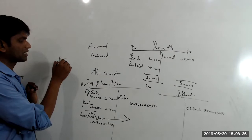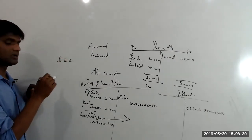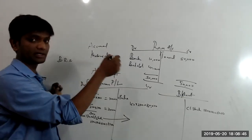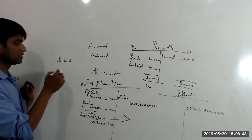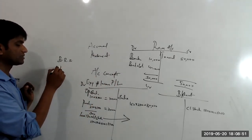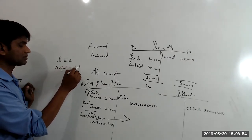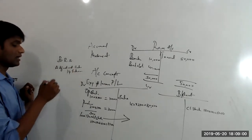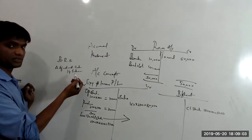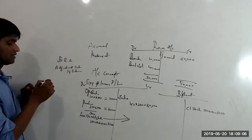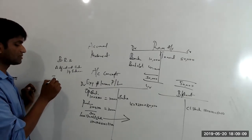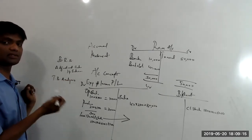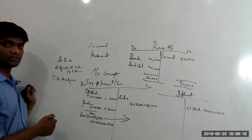Following the fundamentals, we have bank reconciliation — done very practically — then ledger review and analysis: how to interpret a ledger, how to audit a ledger. Then we have adjustment entries — about 14 final entries. We'll prepare schedules and pass general entries. After that, we cover trial balance analysis: how to analyze a trial balance, because there can be errors, and you need to figure them out.